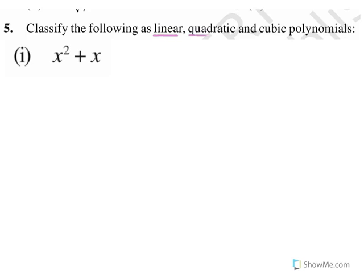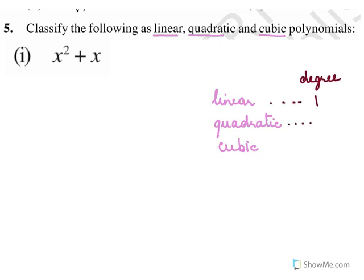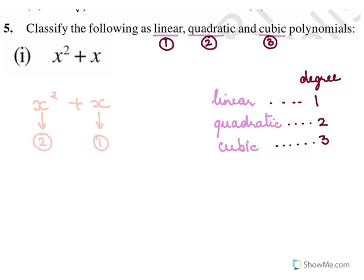Classify the following as linear, quadratic, and cubic. This classification is done according to the degree: linear polynomials have degree 1, quadratic have degree 2, and cubic have degree 3. For x² + x, the powers are 2 and 1. The highest power is 2, so the degree is 2, which means it is a quadratic polynomial.